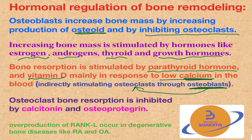Osteoclast bone resorption is inhibited by calcitonin and also by osteoprotegerin. Overproduction of RANK ligand occurs in degenerative bone diseases like rheumatoid arthritis and osteoarthritis, resulting in excessive bone resorption.